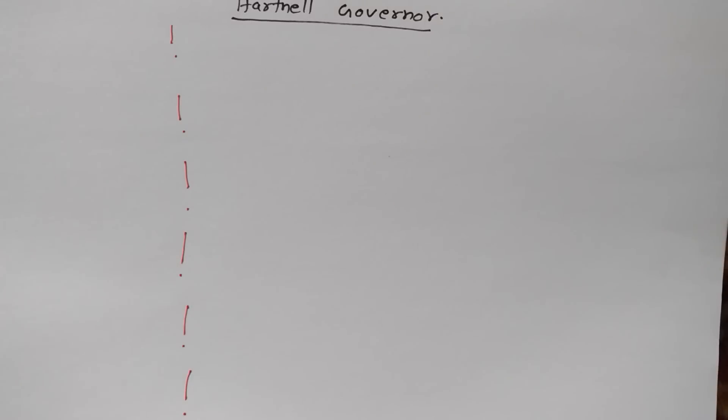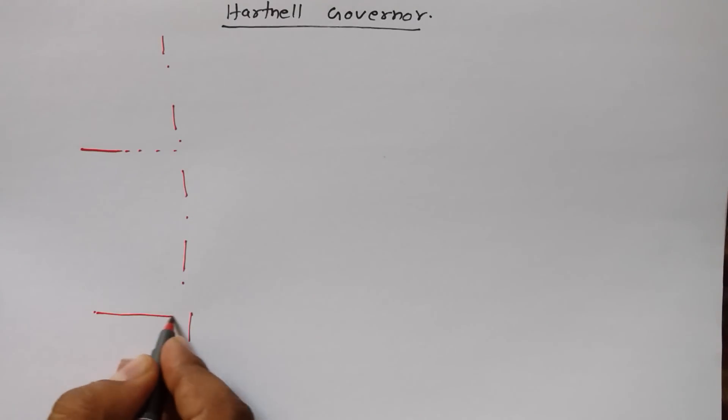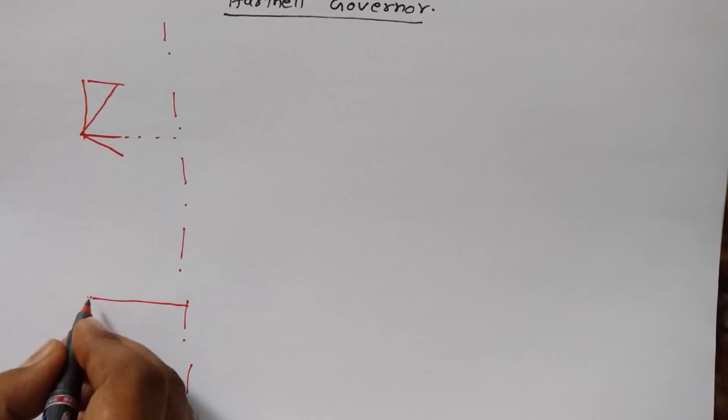First of all, draw a center line. I'm not going to draw the exact diagram of the Hartnell Governor because that will take a little bit more time, so I'll just draw what I need to derive the equation. This part will be like this, and this part will be like this. Here we have theta one and theta two.